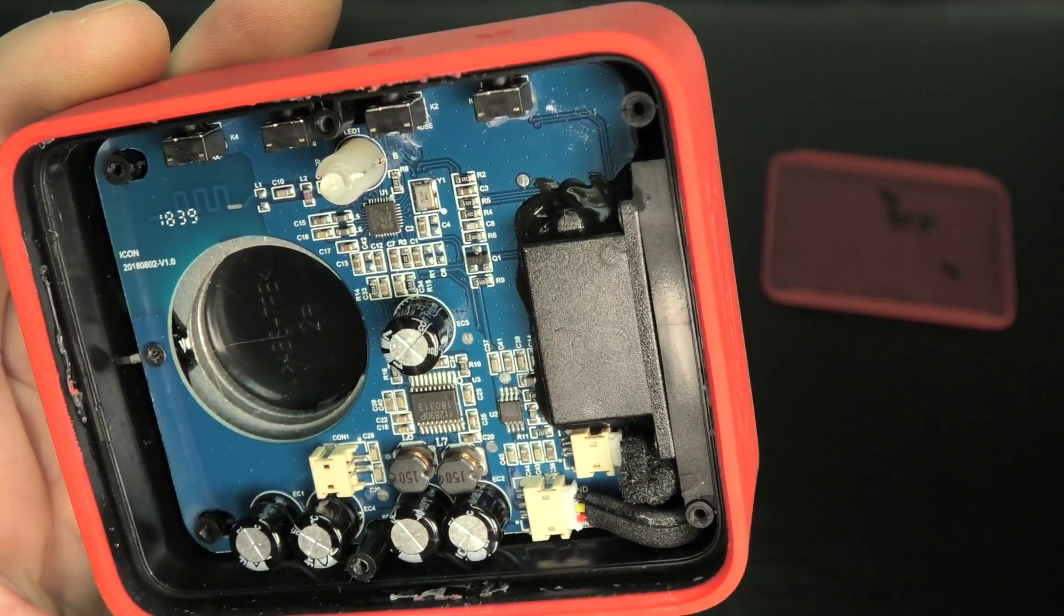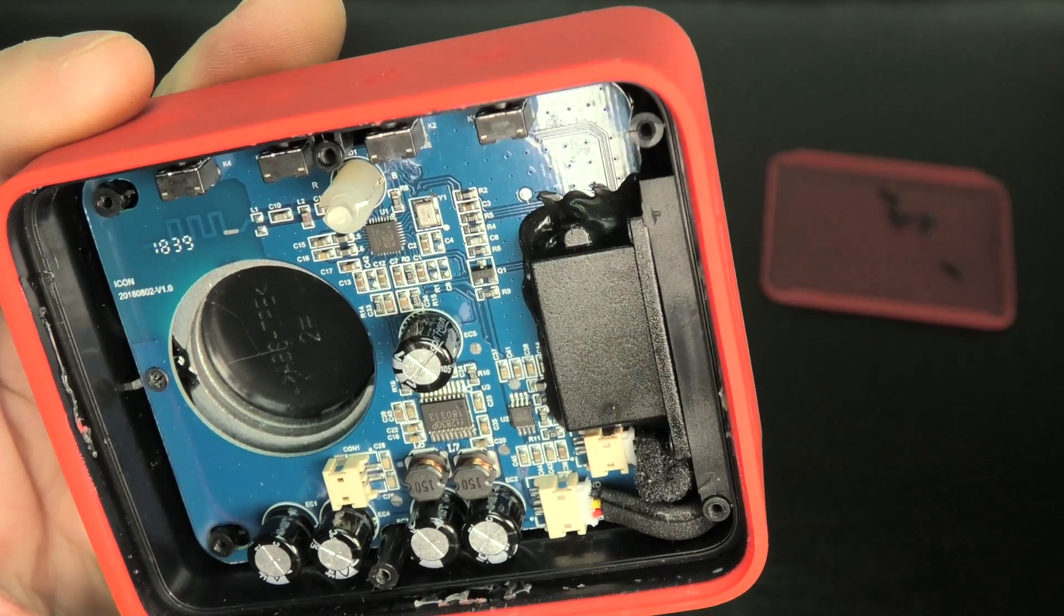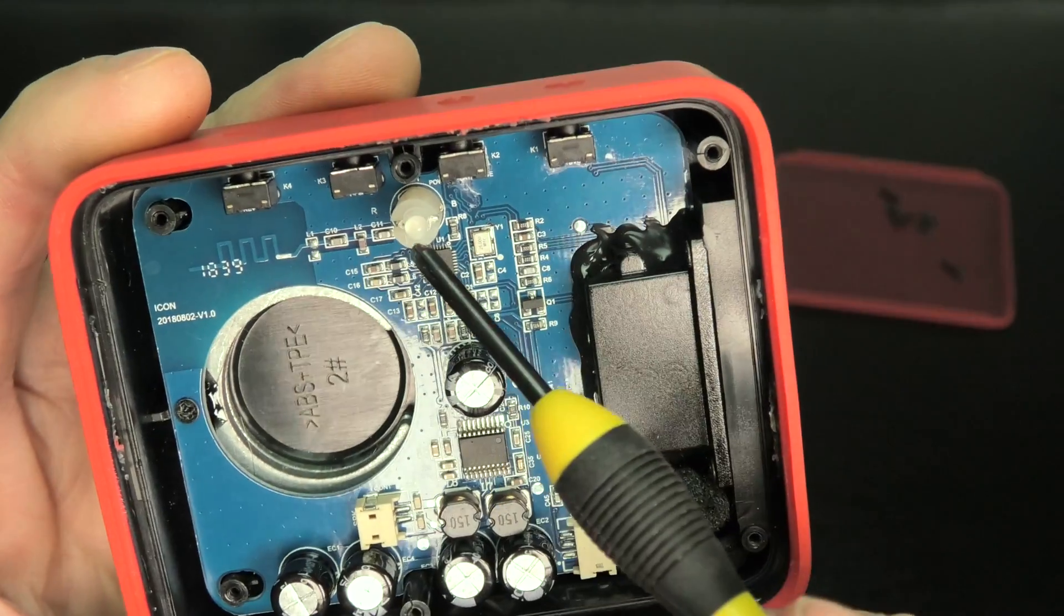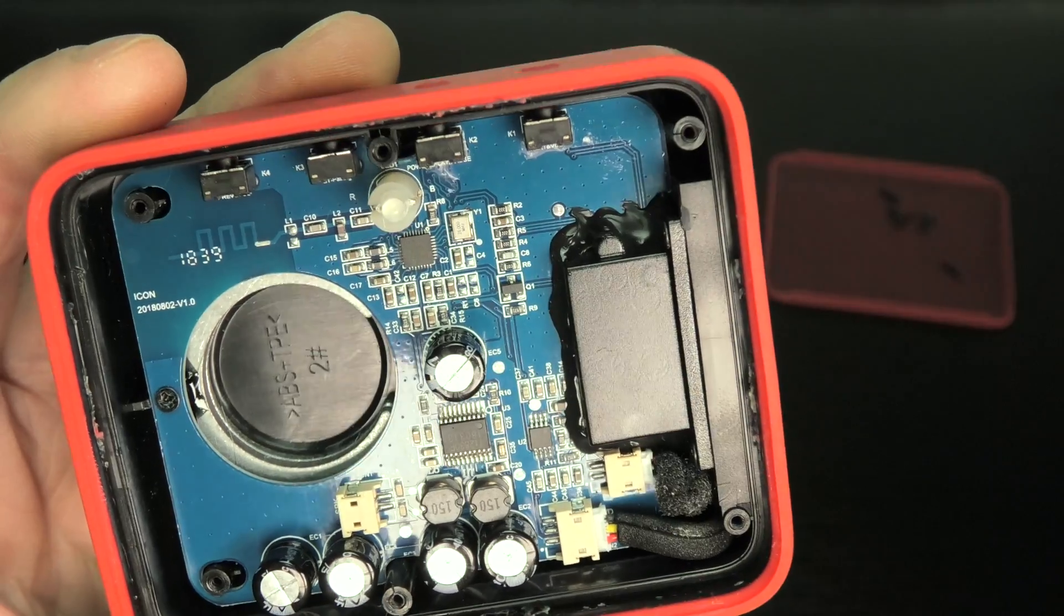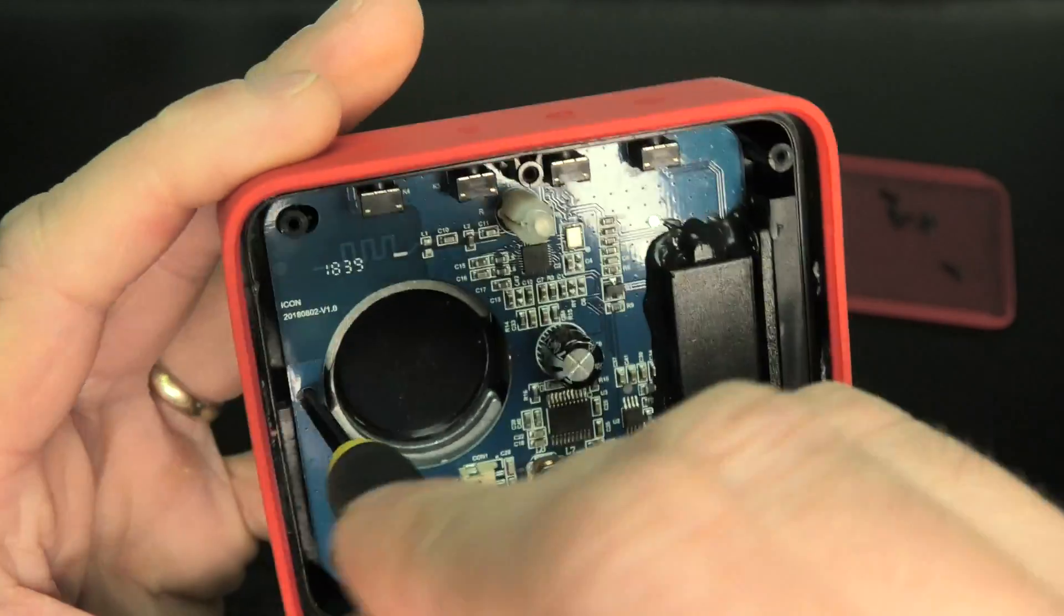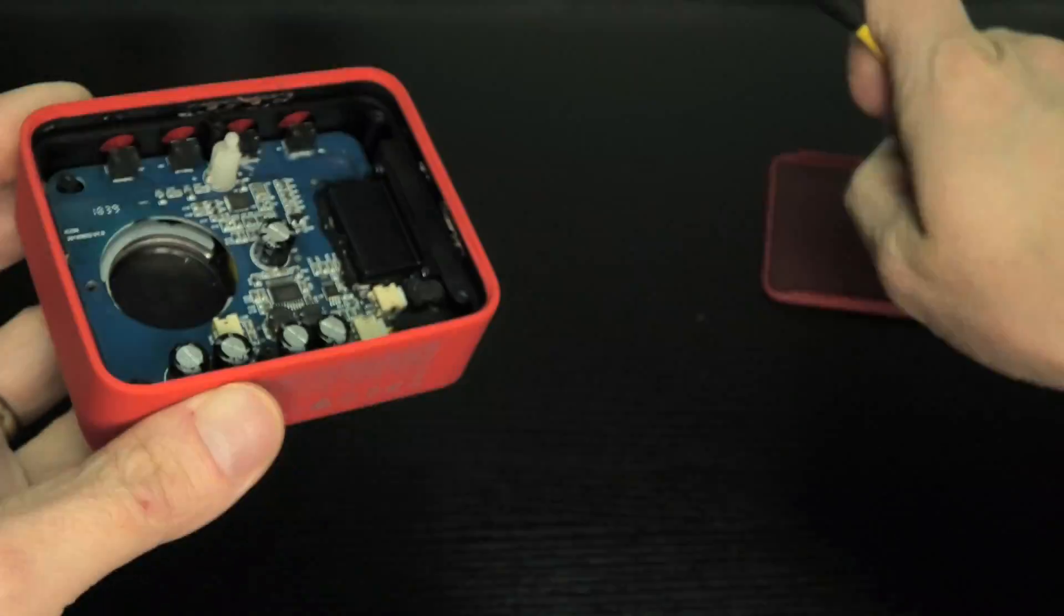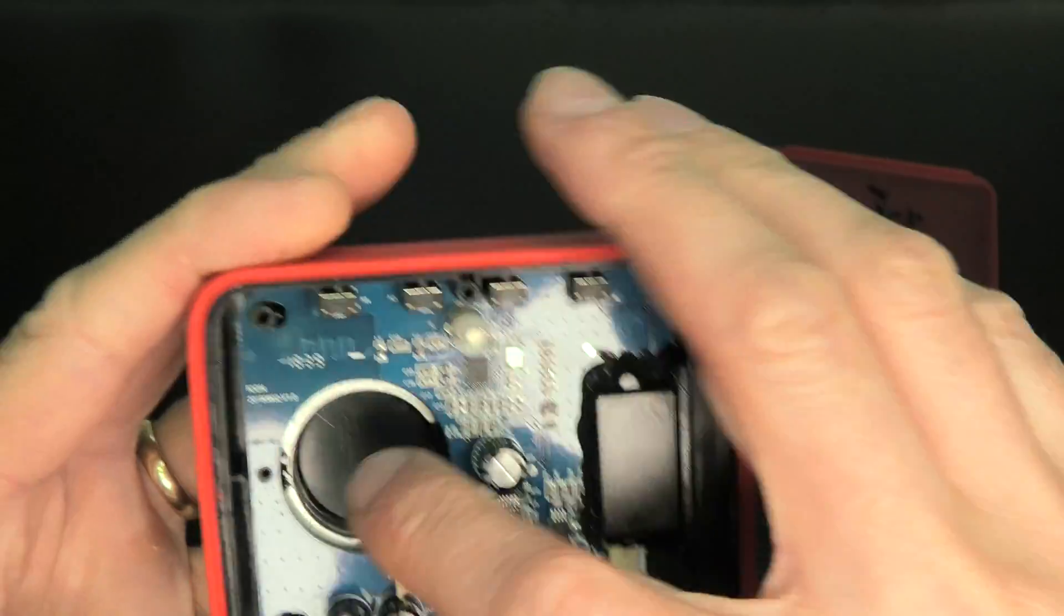And then here there is one more screw that holds the PCB down. Right here you see the LED for when you turn it on or when it's charging. Okay so let me remove the screw and then see if we can take out the board here.